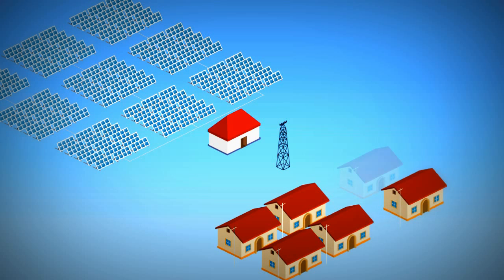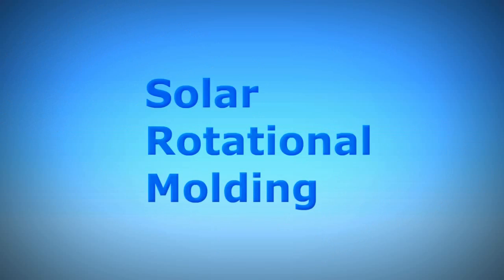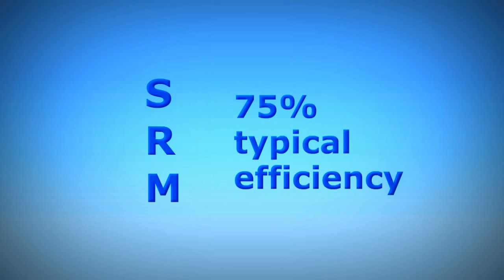Unlike solar electric projects, which require huge capital investments and are still very inefficient, solar rotational molding, or SRM, achieves over 75% thermal efficiency. More importantly, SRM radically reduces the capital requirements of the rotational molding process.